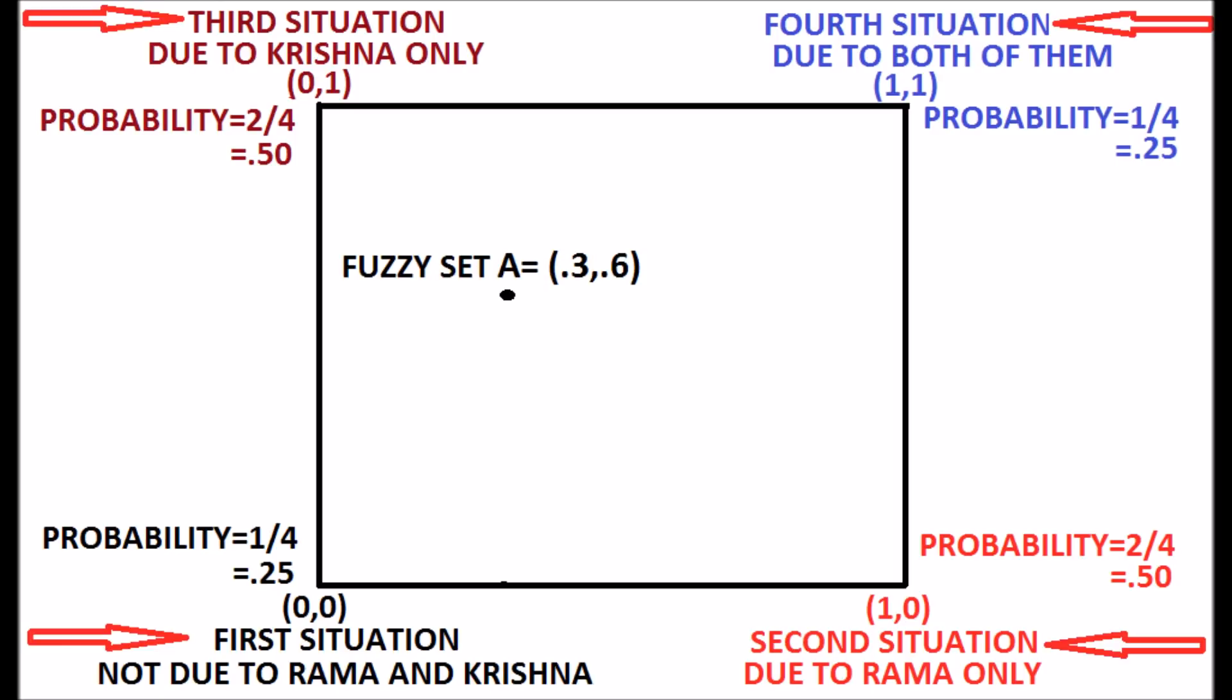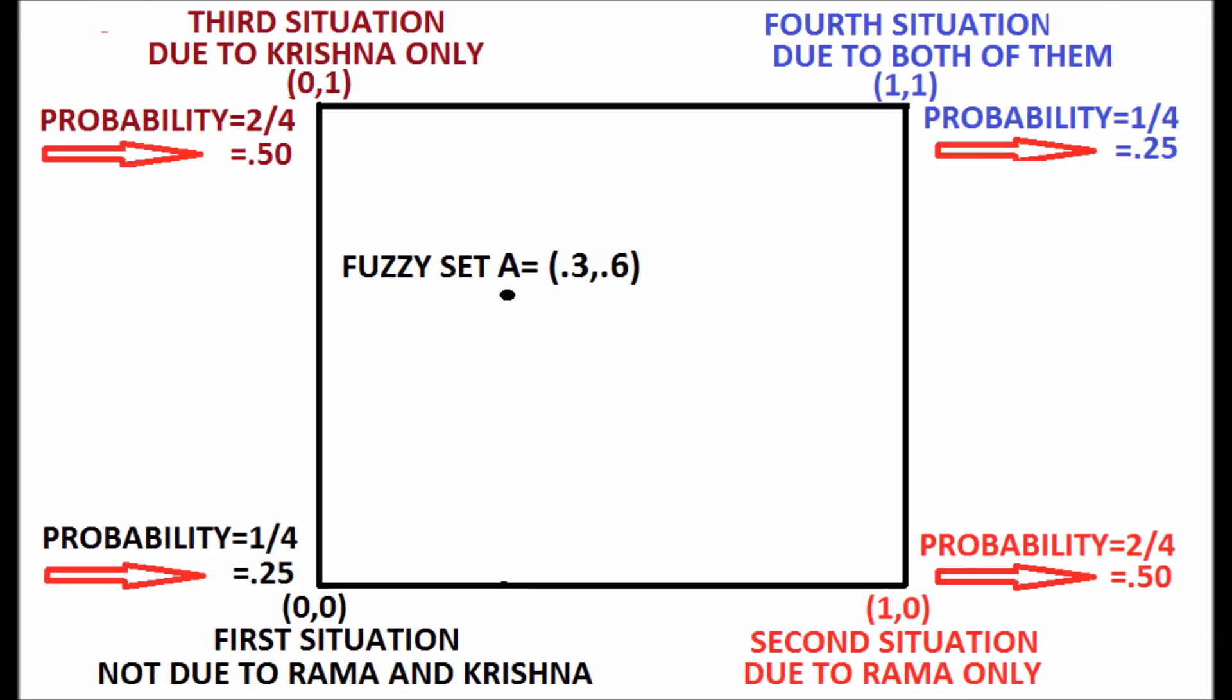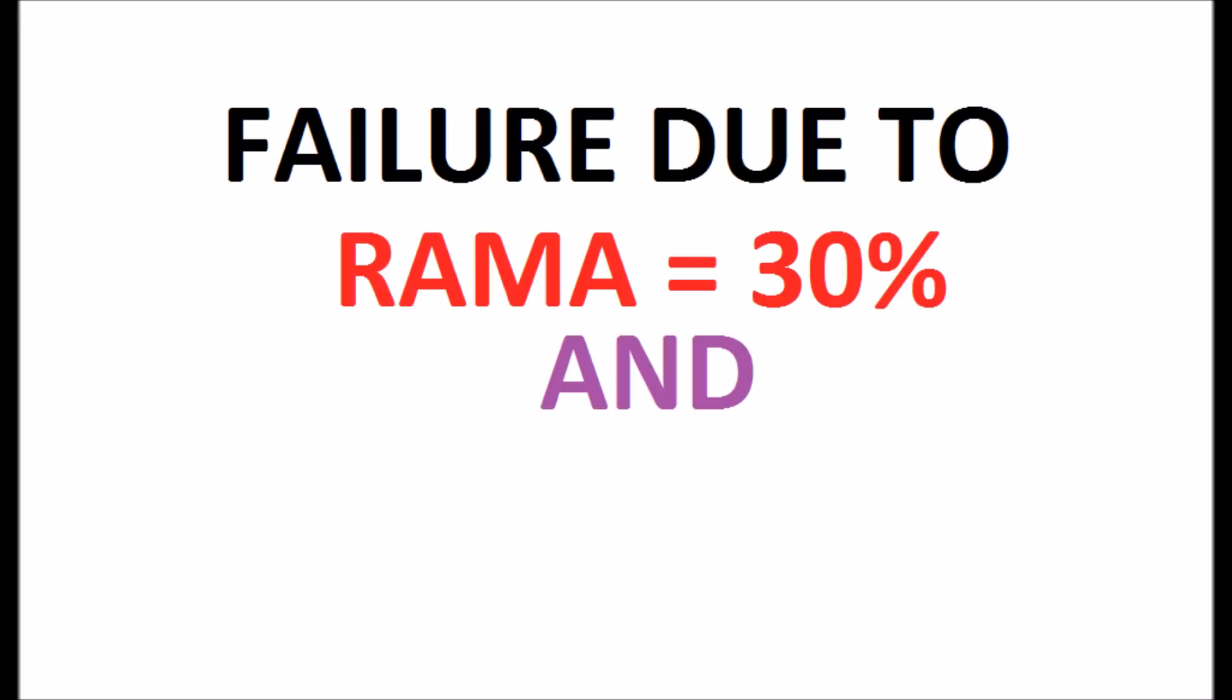The four coordinates of the square, certainty is present, and maximum number of possible situations as far as probability is considered. The estimated values of probability are given. But point A is one of the situations expressing reality with membership values and called as a fuzzy set. In this case, failure due to Rama is 30% and failure due to Krishna is 60%.